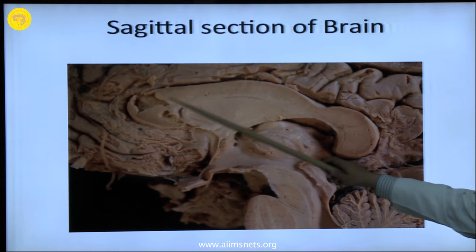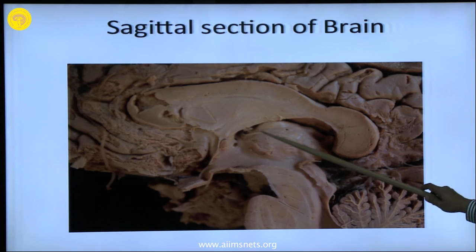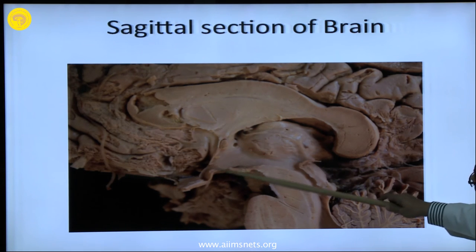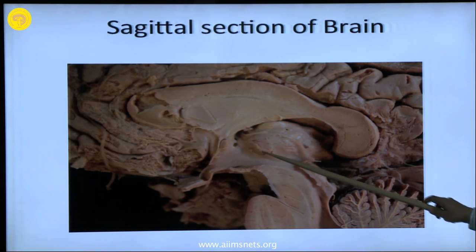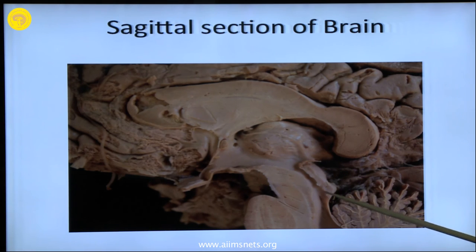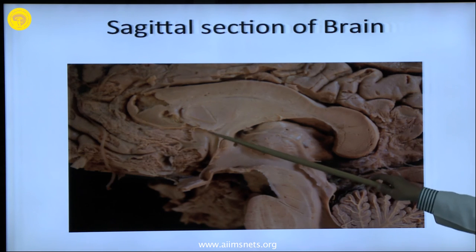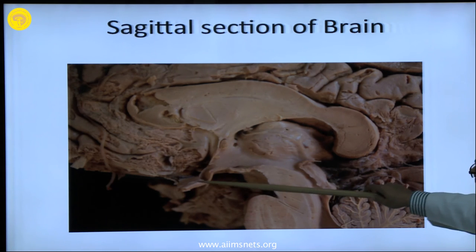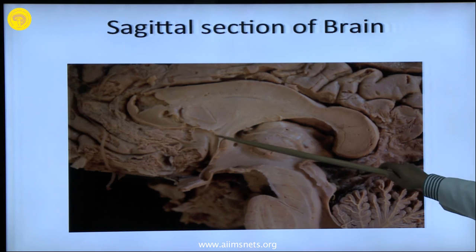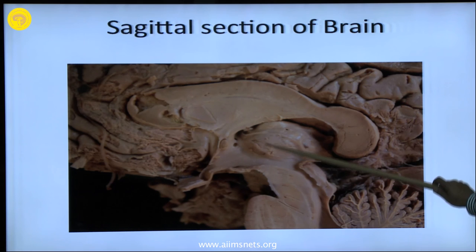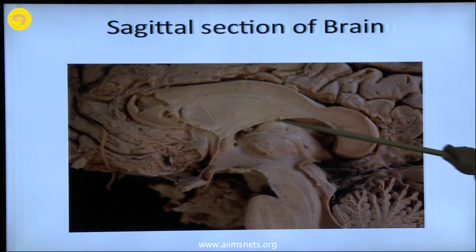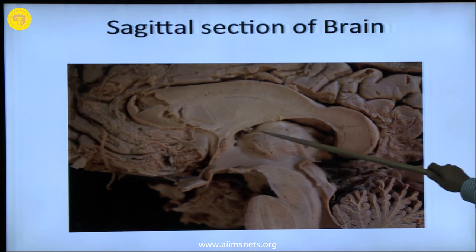You can identify the corpus callosum, then this is the foramen of the thalamus. This is the hypothalamus and you can see a distinct groove — the hypothalamic sulcus — coming from the interventricular foramen towards the cerebral aqueduct. You can see the optic chiasma, the lamina terminalis coming to the genu of the corpus callosum. This area is the third ventricle.